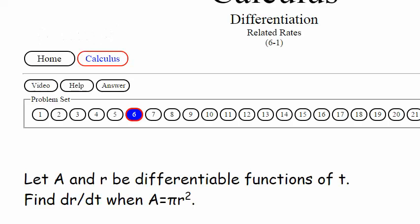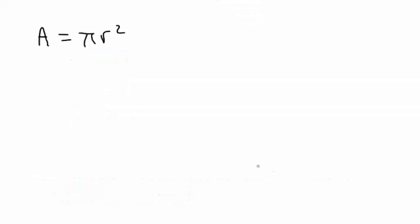So we have A, which could represent area I suppose, is equal to pi r squared. And we wanted to find, I've already forgotten what we wanted to find, dr/dt. Okay, dr/dt. So we're going to write that out right here. dr/dt.